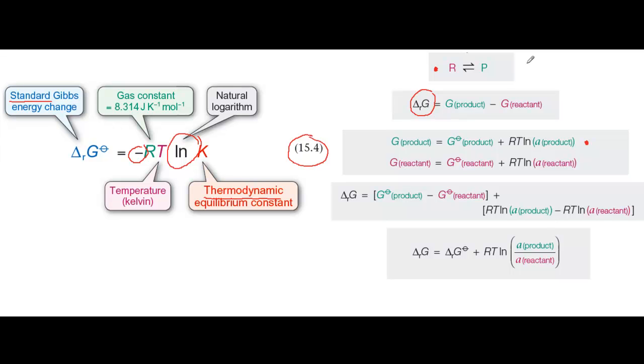for a gas, A is the partial pressure of the gas divided by the standard pressure, and for a solution, A is the concentration of the solute divided by the standard concentration. And we can write an expression like that for both the reactant and the product.